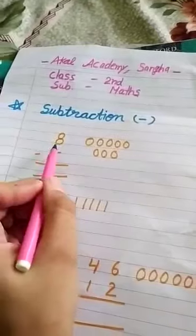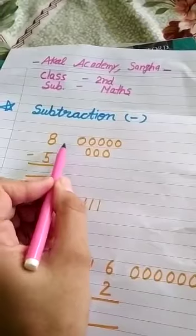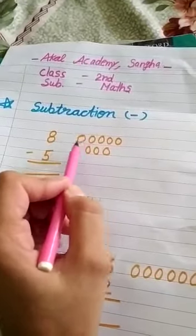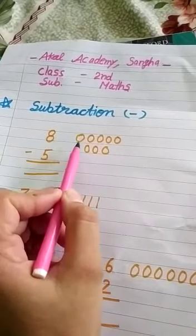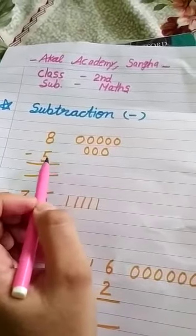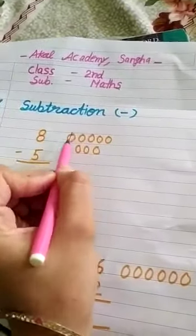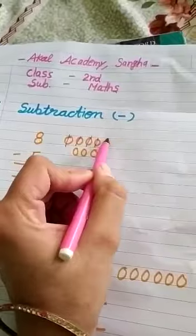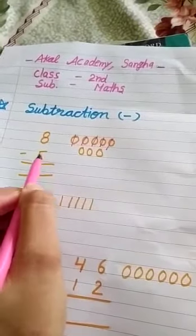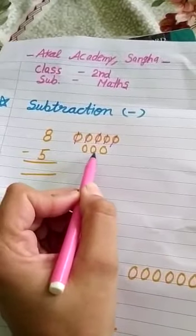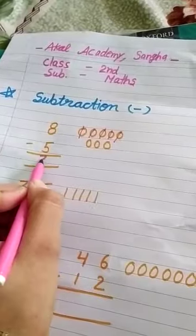For this difference, here is 8 and here is 5. We will draw 8 things like circles, lines, anything. Now cut the 5 circles: 1, 2, 3, 4, 5 because 5 is given here. Now count how many are left: 1, 2, 3. The answer is 3.